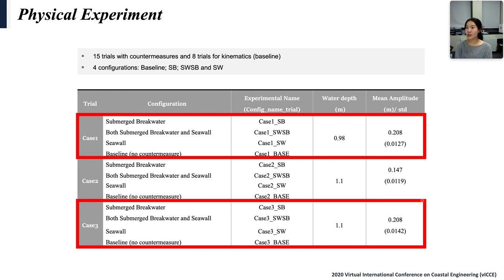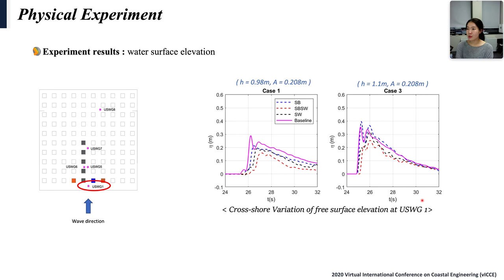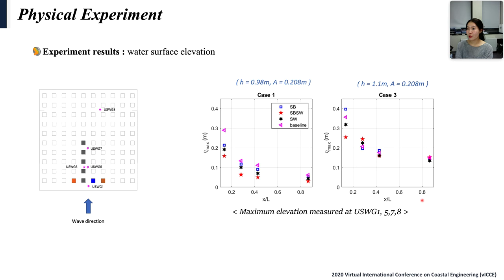This is an example of data processing in a tsunami case. Water surface elevation was measured in front of first building row in four configurations. Both submerged breakwater and seawall case can dramatically reduce crossshore elevation exerted in first building arrays. But in case 3, with high water level and high tsunami height, elevation measured in submerged breakwater is even larger than baseline. These two figures show the maximum water surface elevations at ultrasonic wave gauge 1, 5, 7, and 8. X is the distance from ultrasonic wave gauges to shoreline, and L is the distance from shoreline to 10th building row.